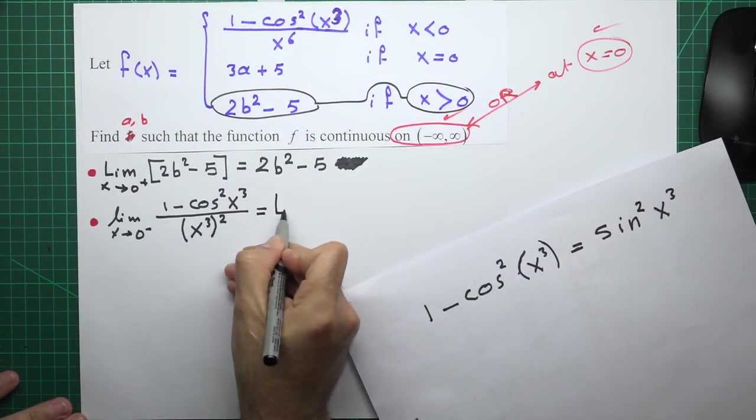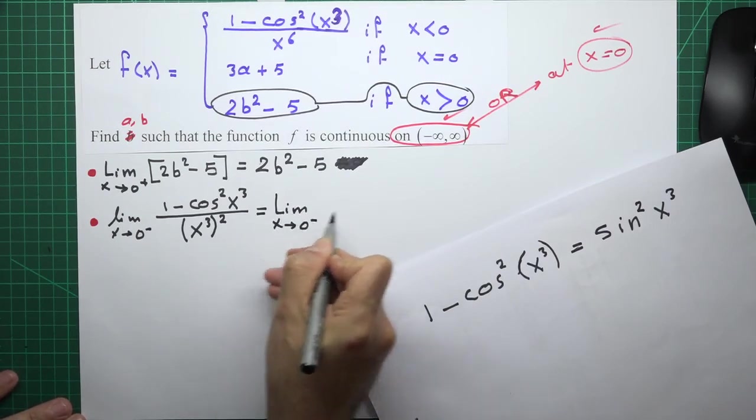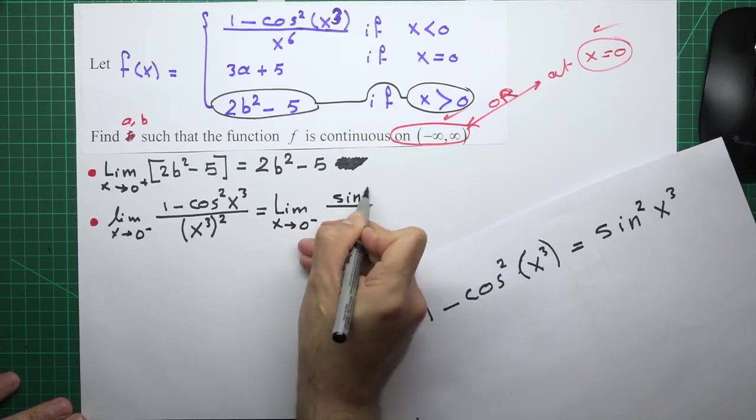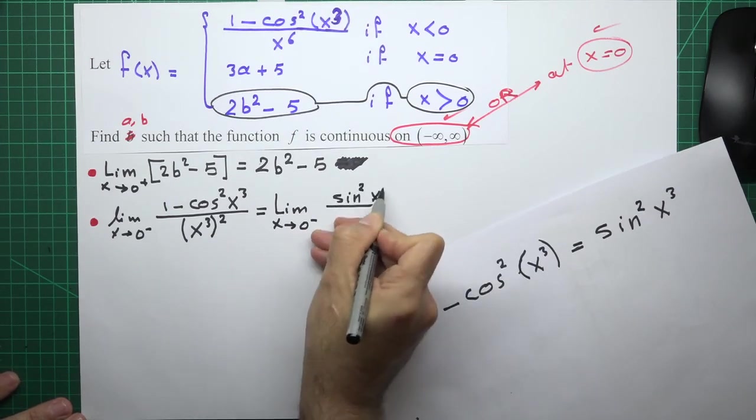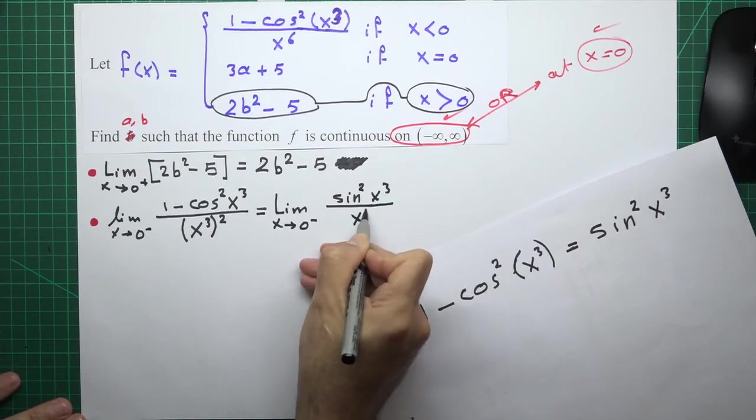It will be a limit as x goes to 0 from left of sine squared of x cubed over x cubed, or squared.